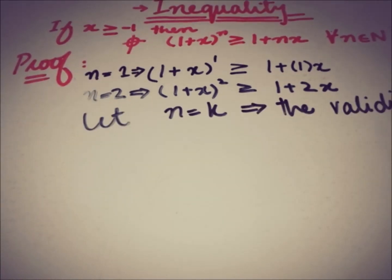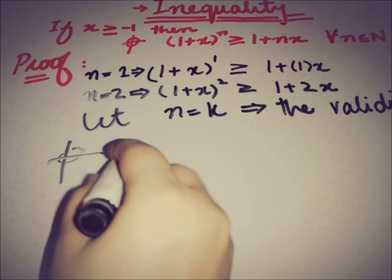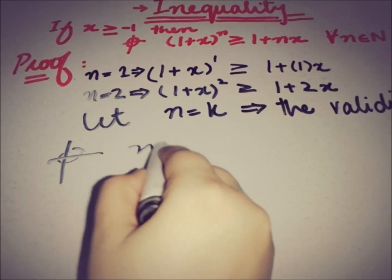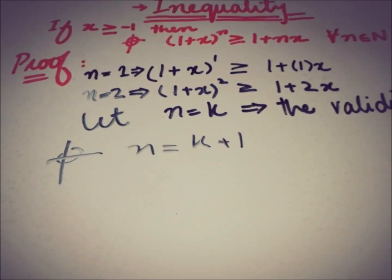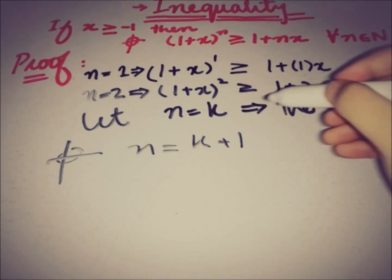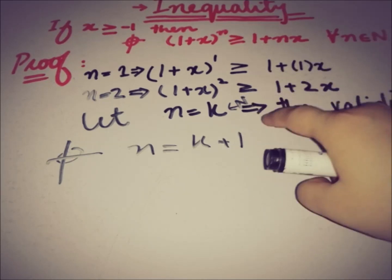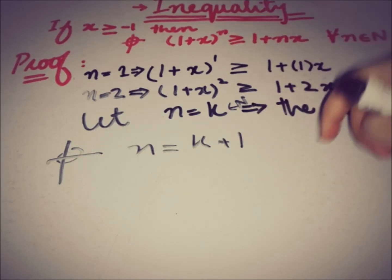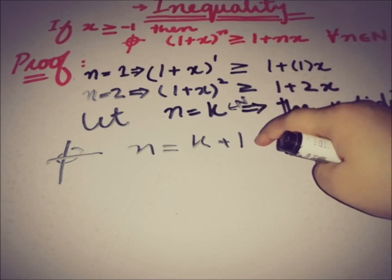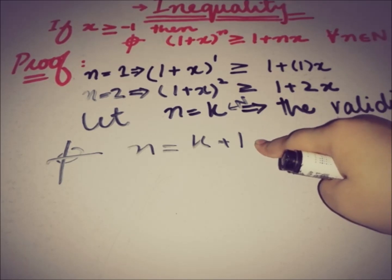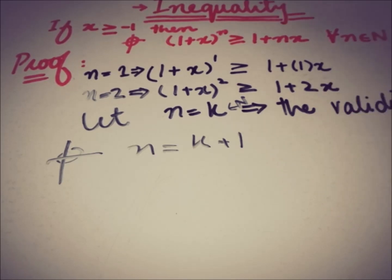Let's suppose that this inequality is true for any natural number k. So let n equal to k imply the validity of the inequality. The target is to show that it is also true for k plus 1, where k is any natural number, using these assertions.